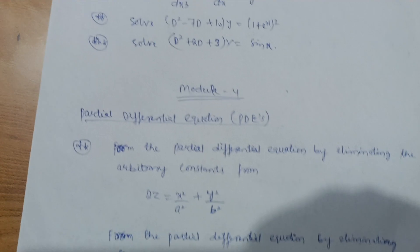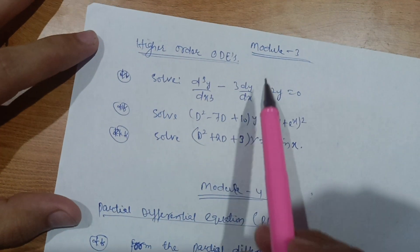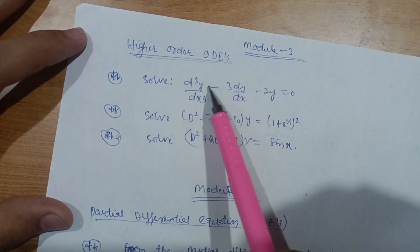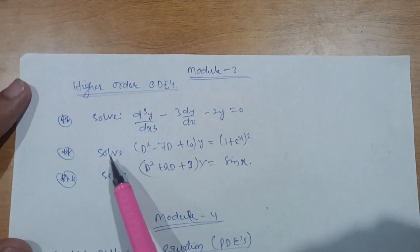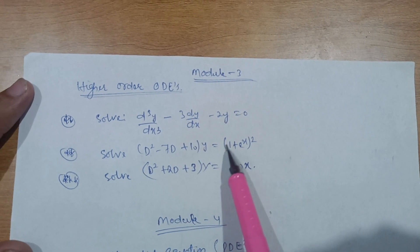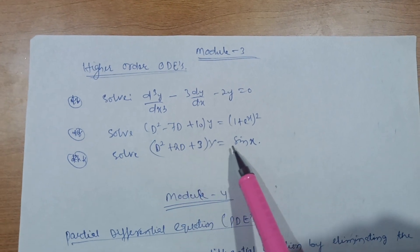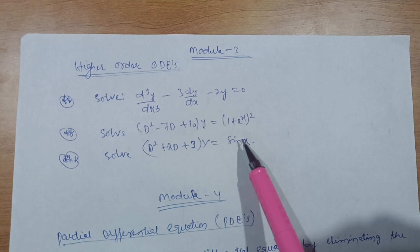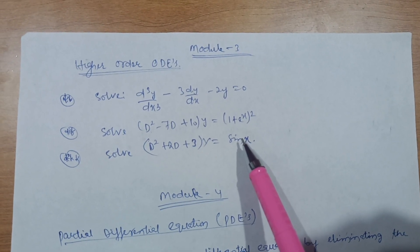Modules 3 and 4 involve higher concepts of ordinary differential equations. Examples include: solve D³y/dx³ − 3(dy/dx) − 2y = 0; solve (D² − 7D + 10)y = 1 + e^(2x); and solve (D² + 2D + 3)y = sin(x). These are example questions from the module — the syllabus for diploma maths is less extensive than for regular engineering maths.